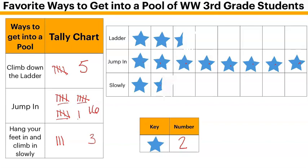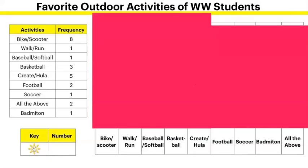For Slowly Climbing In, I've got two and one extra — that's three. Good job. Looking at the next one: Favorite Outdoor Activities of Washington West Students. I have my title up top. Instead of a tally chart, I've created a frequency table. This frequency table is what I create after putting in all your tallies and translating them into numbers.